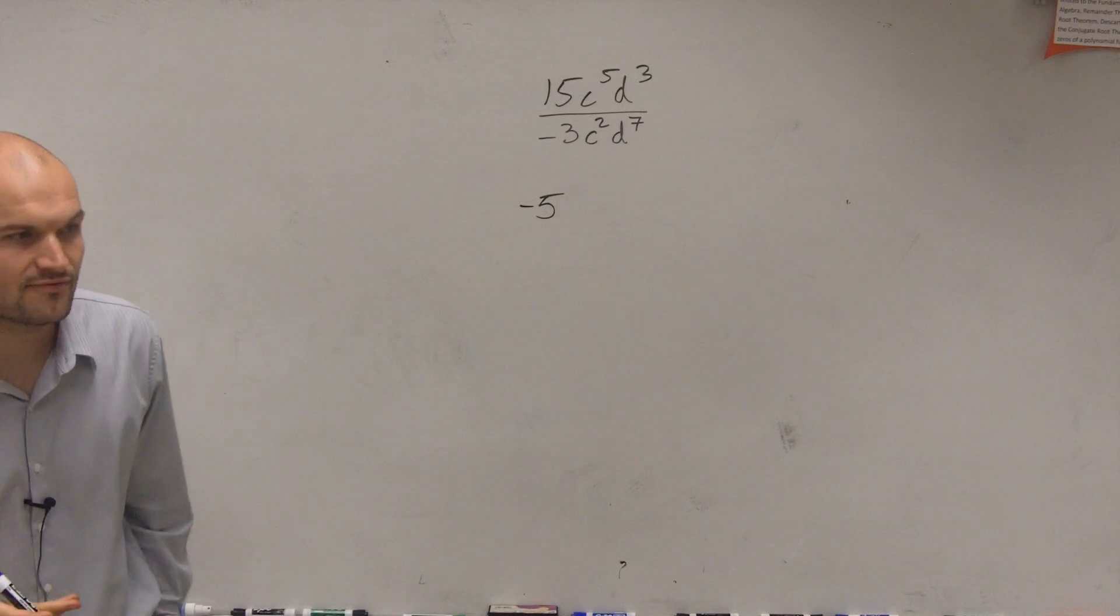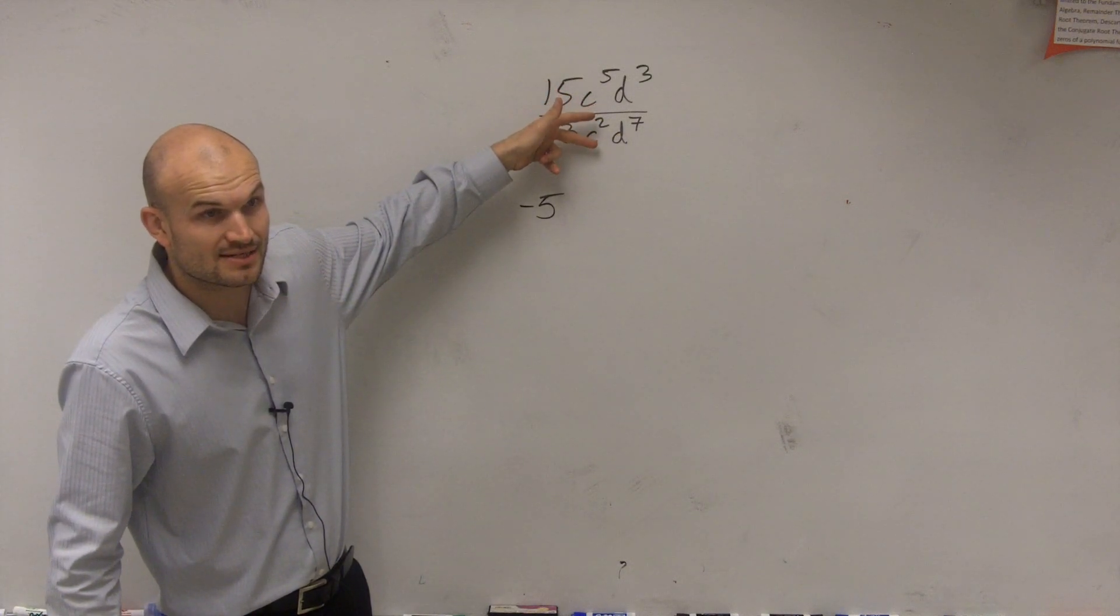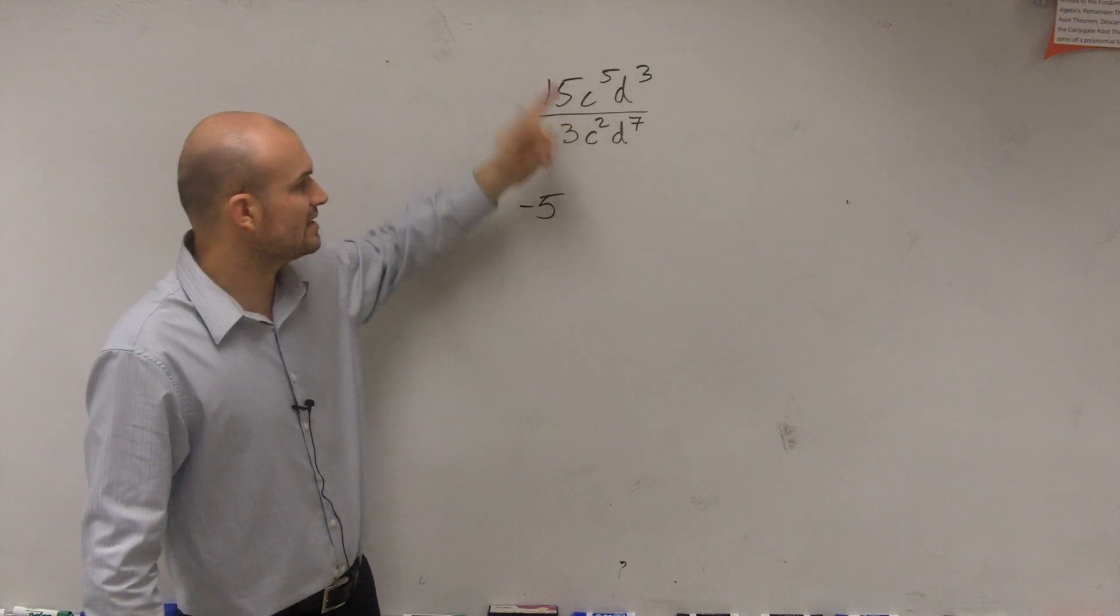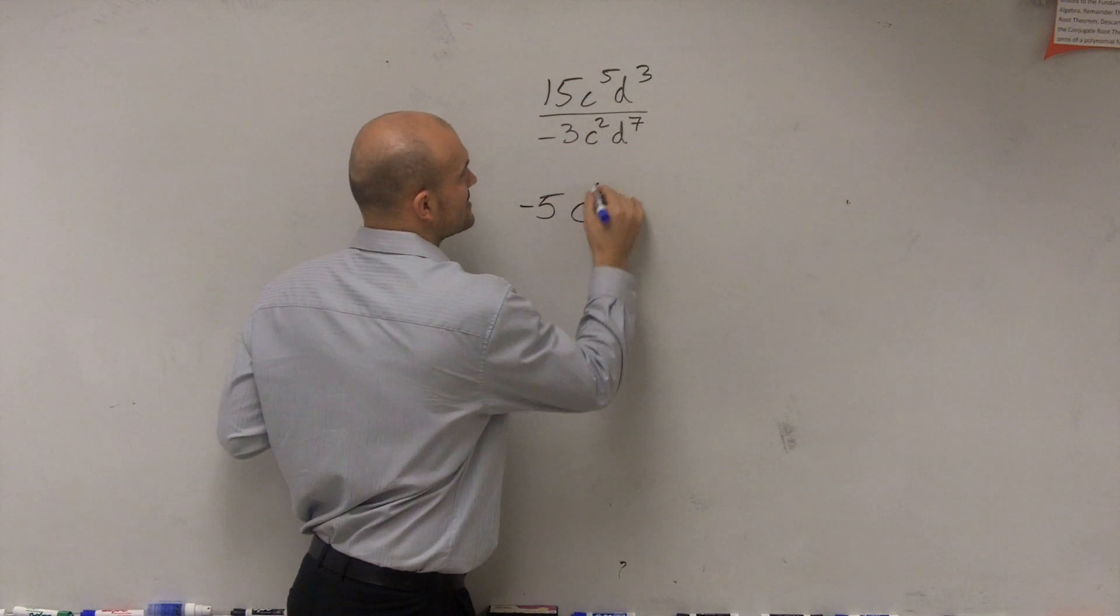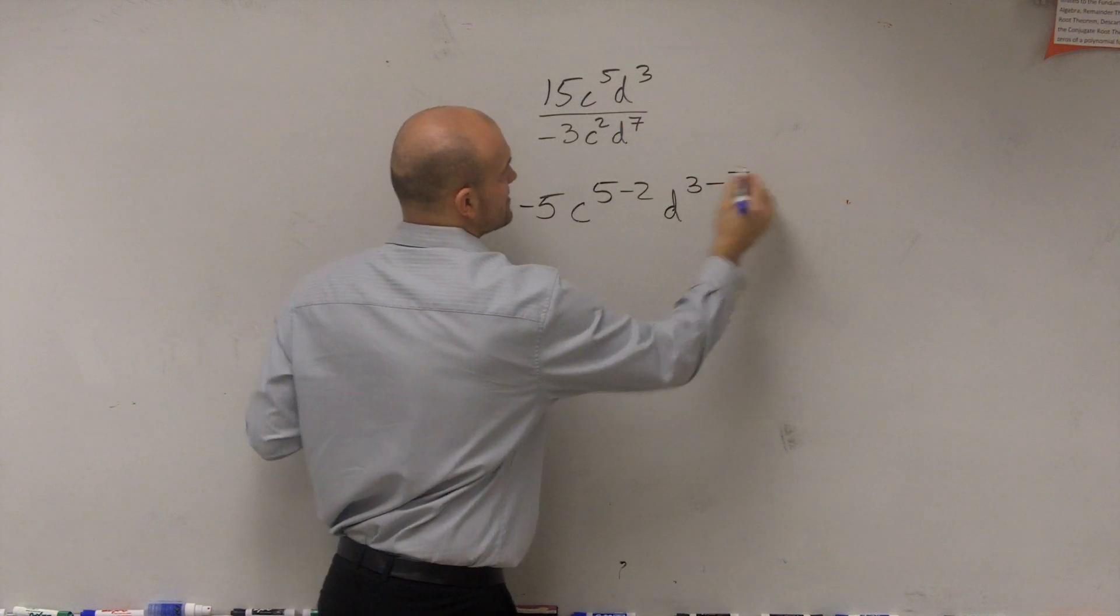But our quotient property rule states that whenever we divide two terms with the same base, we subtract their powers. So when dividing c to the fifth divided by c squared, that's going to equal c to the 5 minus 2. And this will be d to the 3 minus 7.